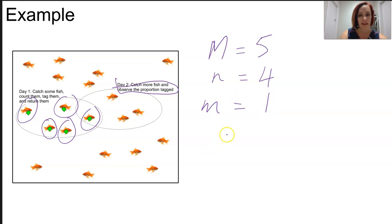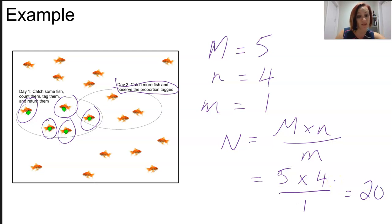When I look at the Lincoln index, remember capital N equals M times little n over little m. These are confusing letters - think m for marked. Then we have got five multiplied by four divided by one, which is going to give us 20. Now if you actually sit and count those goldfish, there are 20 indeed.